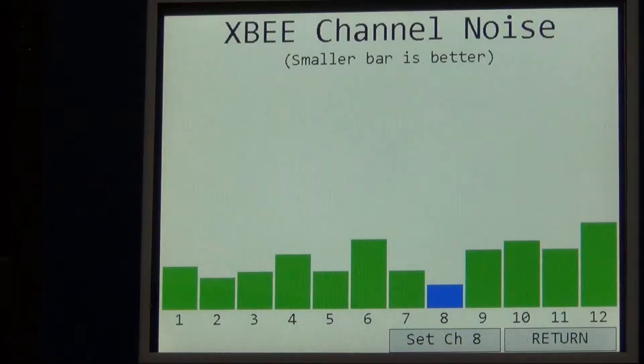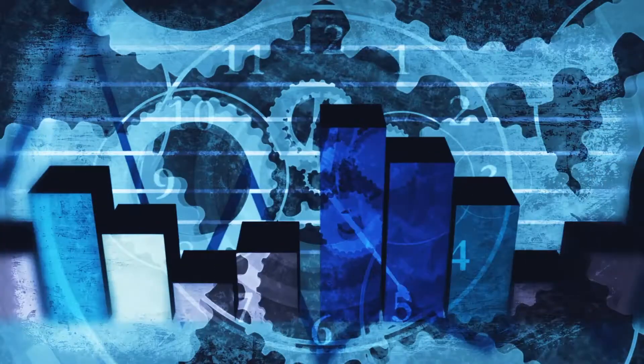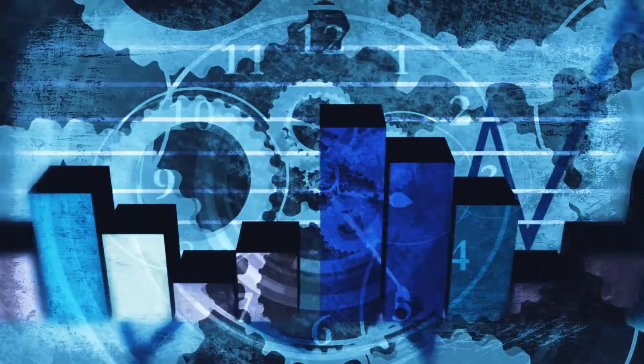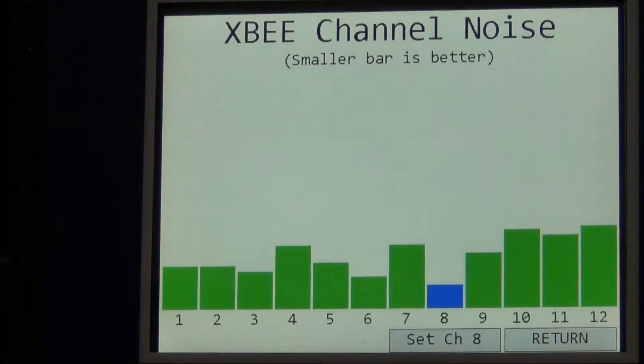The noise analyzer comes to life and populates the screen with a visual representation of channel noise. Because we're measuring noise and not signal strength, the lowest column has the least amount of noise.